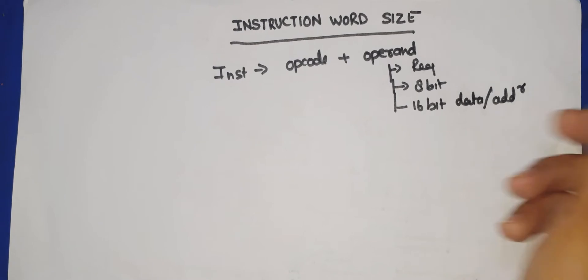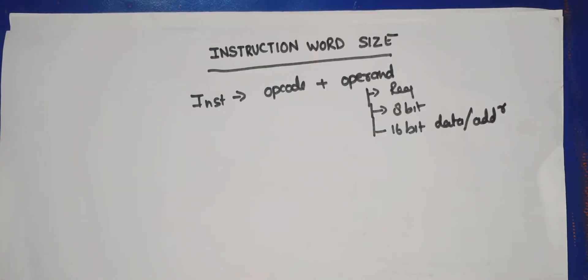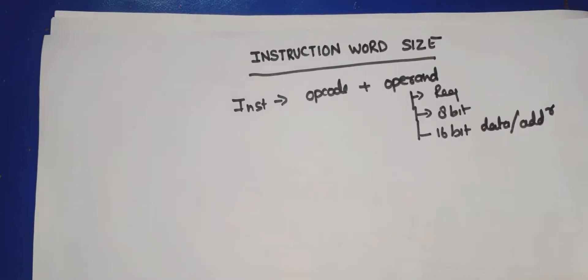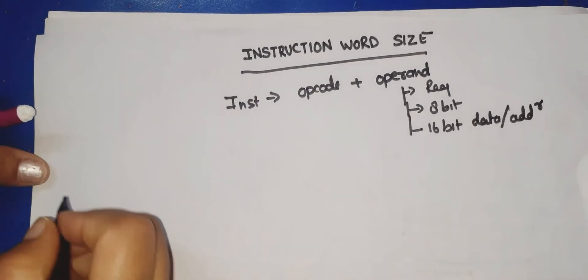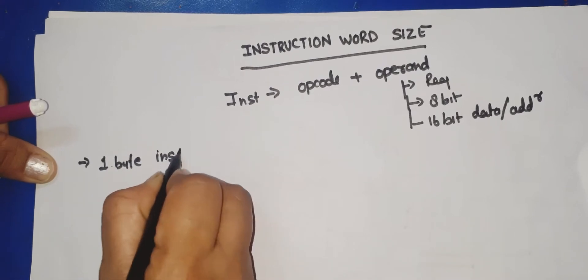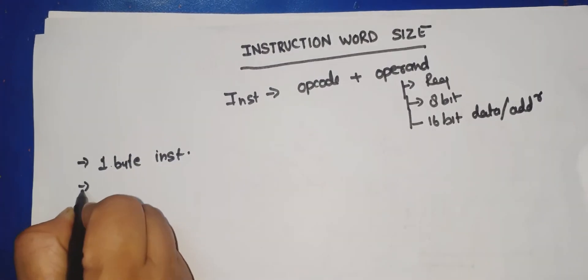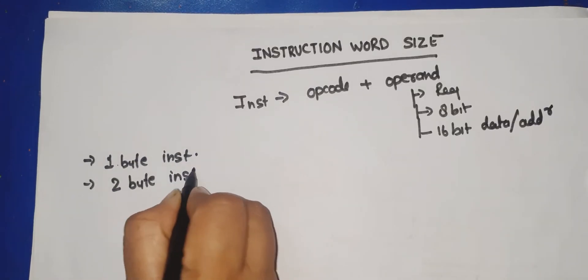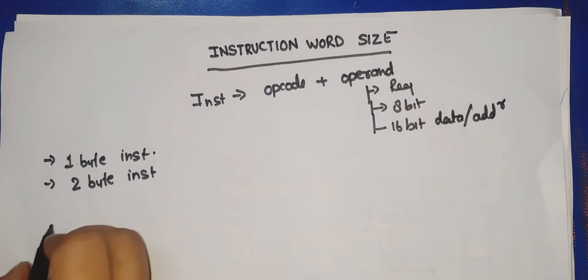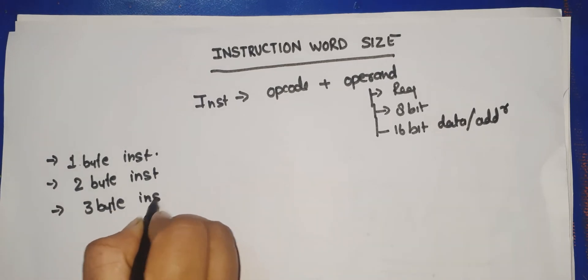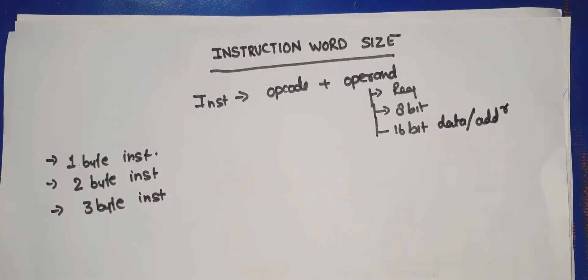The size of an instruction is expressed in bytes. According to size, instructions can be divided into three groups: the first group is one-byte instructions, the second is two-byte instructions, and the third is three-byte instructions.